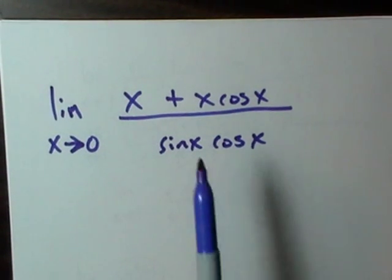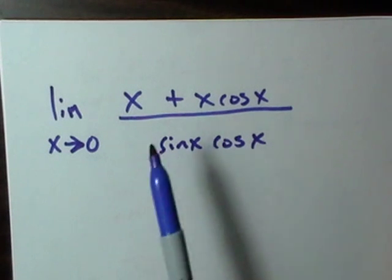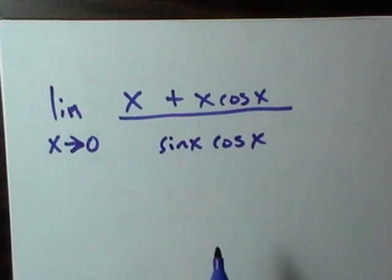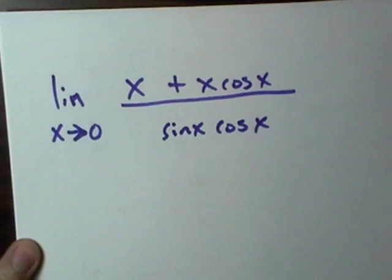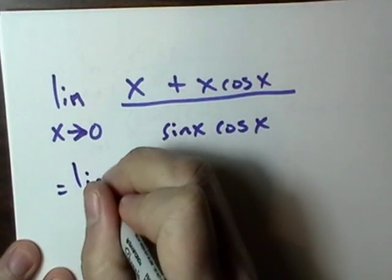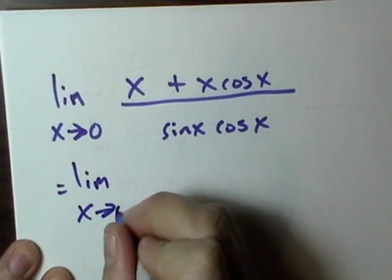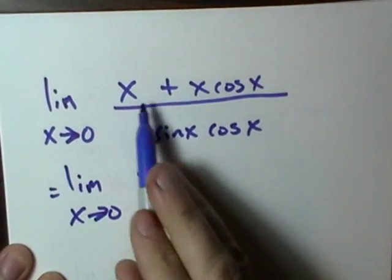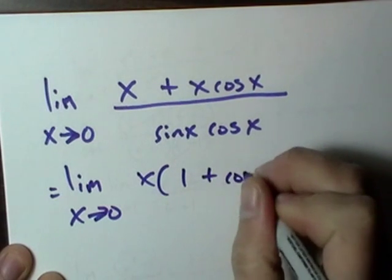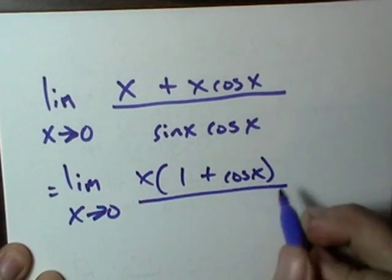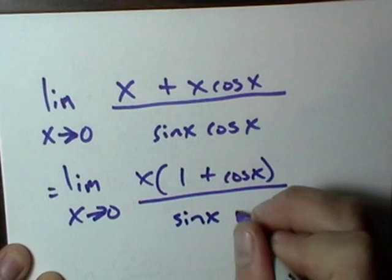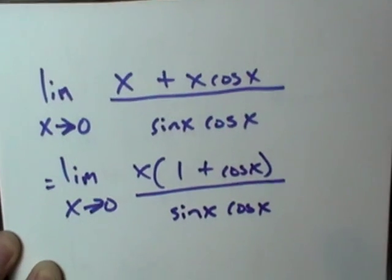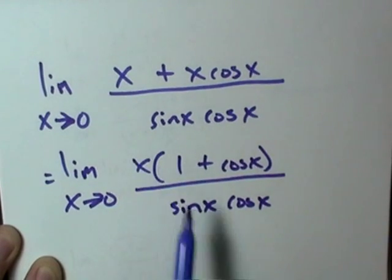First thing I kind of want to do is factor out an x. Yeah, let me do that. I'm going to factor out an x, and I'm just going to see what it looks like. Sometimes it's just trial and error. I'm going to pull the x out of here, and that's going to be one plus cosine x over sine x cosine x. And that looks like it works pretty good, because I've already got a one there.